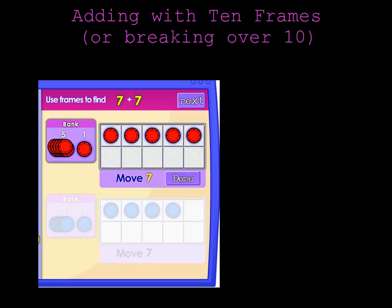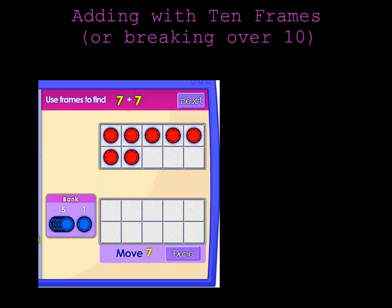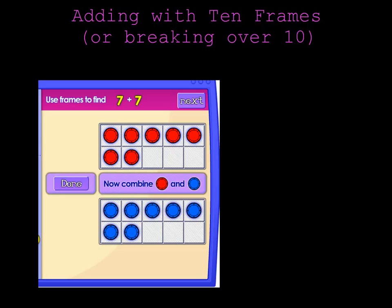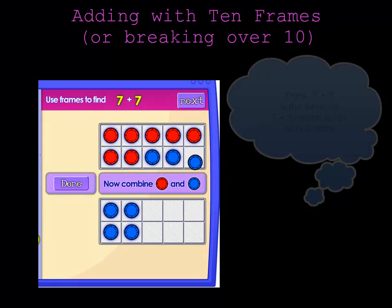Now, let's do 7 chips in the top 10 frame and we'll do 7 chips down below. So once we have 7 in the top and 7 in the bottom, we're going to make a group of 10. We'll move 3 chips up to complete the top 10 frame.